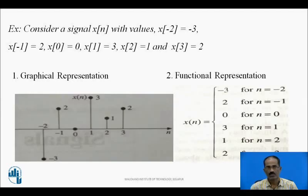Consider a signal x(n) with values: x(-2) = -3, x(-1) = 2, x(0) = 0, x(1) = 3, x(2) = 1, and so on. The different values of n vary from -2, -1, 0, 1, 2, 3, and the corresponding values of x(n) are -3, 2, 0, 3, 1, 2, represented using the first method: graphical method.